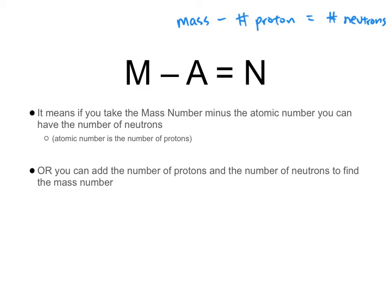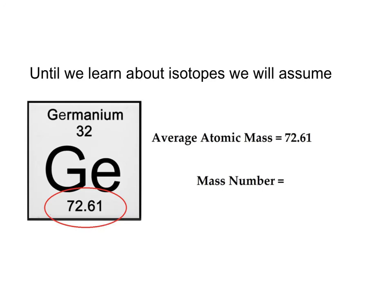So you take the mass number minus the atomic number — which is the number of protons — and it gives you the number of neutrons. For example, if the mass is 12 and the atomic number is 4, then you have 8 neutrons. Notice that 4 plus 8 gives 12 as the mass. You could also be given the number of protons and neutrons and work out the mass from that.